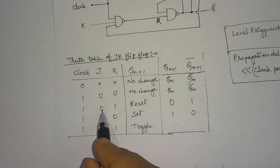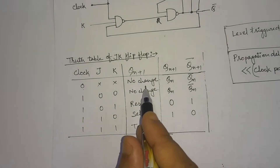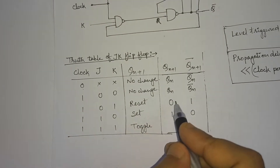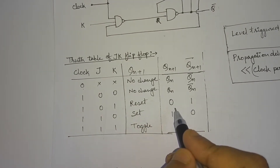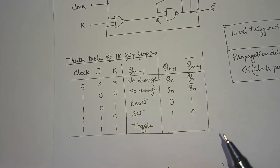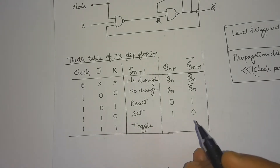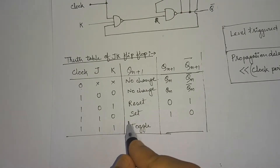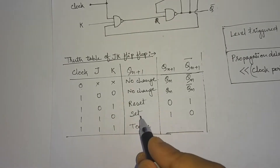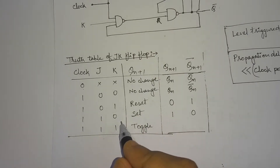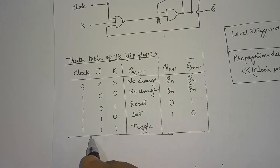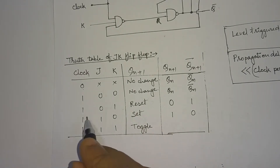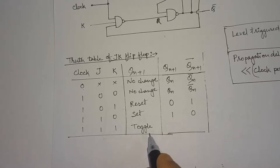When J=0 and K=1, the output is reset — that means the output voltage is pulled down to low. When J=1 and K=0, the next state output Qn+1 is set. And when the clock is 1 and J=K=1, the output is going to toggle.